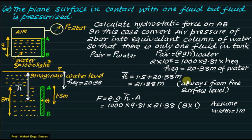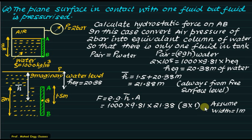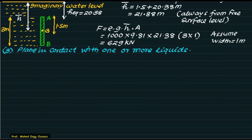The centroid is always measured from the free surface. Force = rho × g × h-bar × area. With width not given, we assume width = 1 meter. Density = 1000, g = 9.81, h-bar = 21.88 meters (note: value used as 28.38 in calculation), gate height = 3 meters, width = 1 meter. The hydrostatic force comes out to approximately 629 kilonewtons.